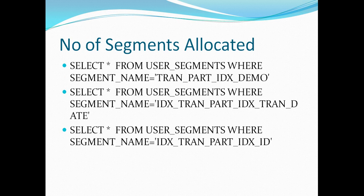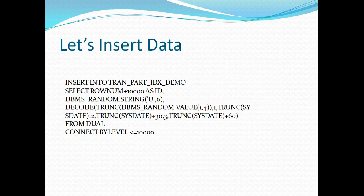Right now, when I have just created the table and the indexes but have not inserted any data, if I query the user_segments table to identify segments allocated to my table and indexes, I will see that no segment has been allocated as of now. This is important to note: though I have created a partitioned table and local indexes, until I insert data, no space is allocated to those partitions. Now I'm going to insert some random data — I've written a query inserting 10,000 rows.